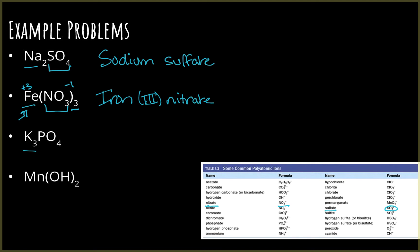The next one: potassium is a single charge, so I don't need a Roman numeral for that one. PO4, if I look at my list, is phosphate. So that would be potassium phosphate.